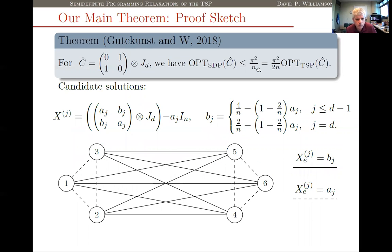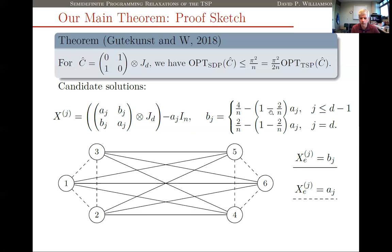What do we guess? For each matrix X^{(j)}, we guess that all edges of cost zero have LP variable value a_j, and all edges of cost one have LP variable value b_j, for some particular values a_j and b_j. We also guess that the sum of all edges incident on any given vertex sums to two — so (n/2 − 1) edges of value a_j plus (n/2) edges of value b_j equals two. This allows us to express b_j in terms of a_j, so really we just need to figure out what the a_j are.